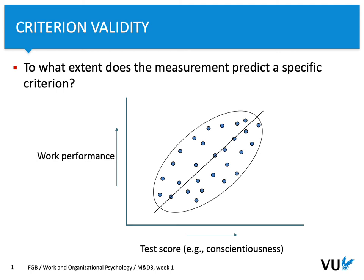In this part of the video, I would like to focus your attention on a very important part of validity, which is criterion validity. In this example, you see a hypothetical correlation between test score — let's say conscientiousness — and work performance.